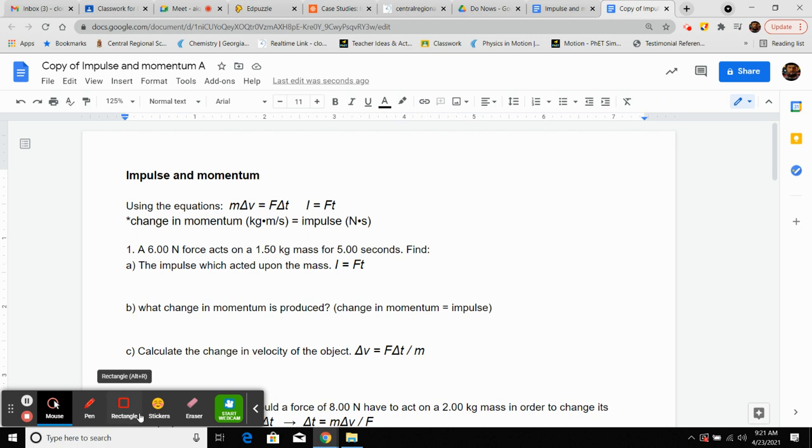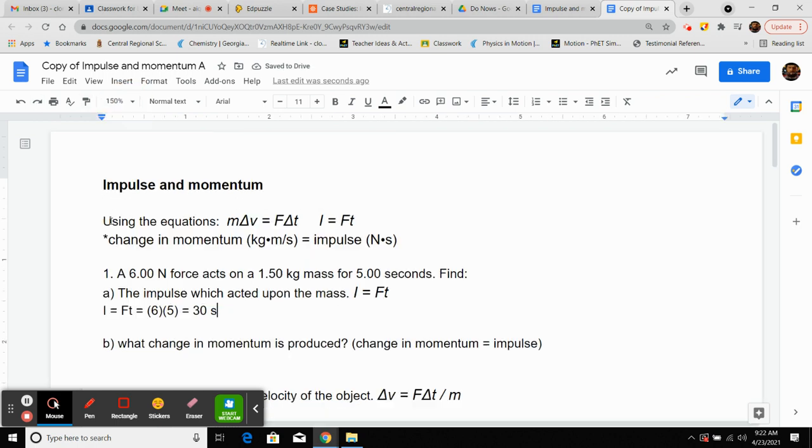So for the impulse, this is the equation we're going to use. So this is how I would ask you all to do it. You would write underneath I is equal to force times time and then put the guys in. Force was 6 newtons, time was 5 and that equals 30 newton seconds.